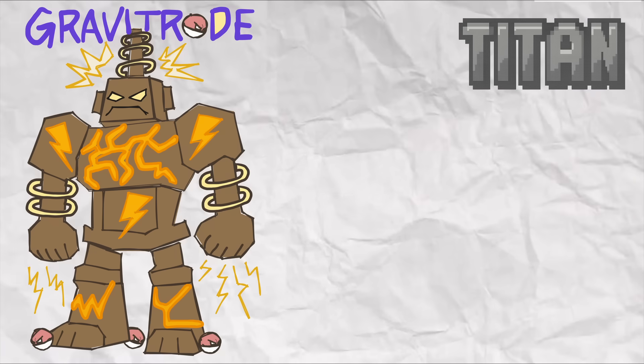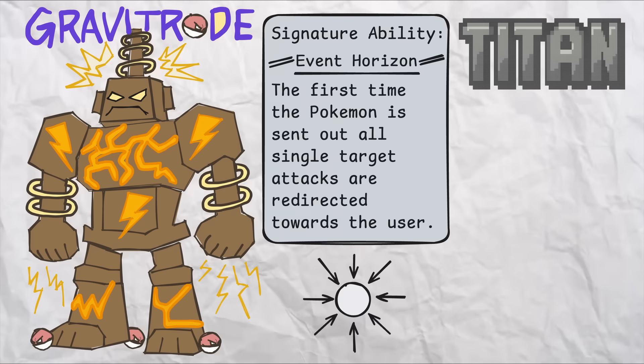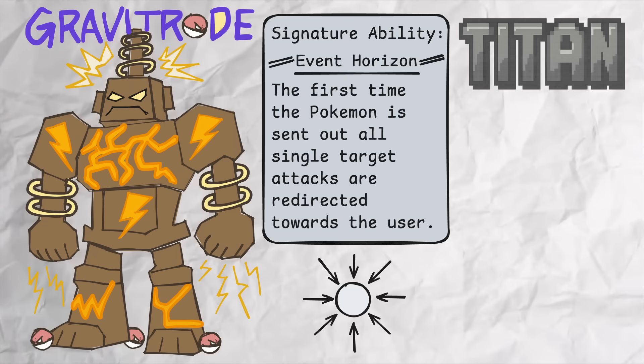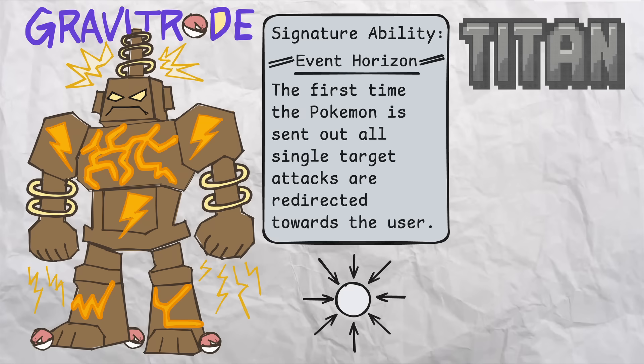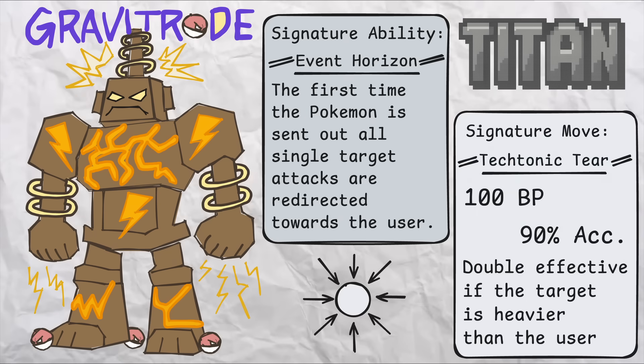Gravitrode has the new signature ability Event Horizon, where its gravity is so immense that on the first turn of being switched in, it draws all single target moves to itself. This is clearly geared towards doubles and functions kind of like a Follow Me or a Rage Powder, but as an ability. It also has the new signature Titan type move called Tectonic Tear, a 100 base power 90% accurate move that doubles in base power if the target is heavier than the user. Titan Pokémon are obviously going to be really heavy, so this power boost is really meant to counter other Titans.